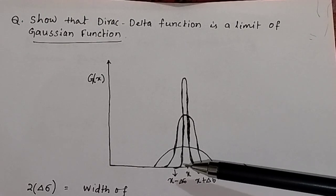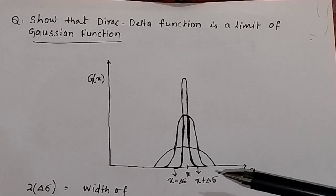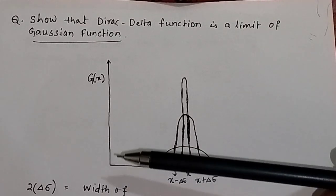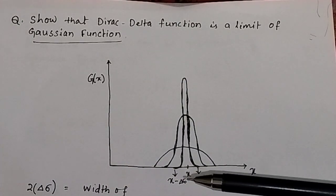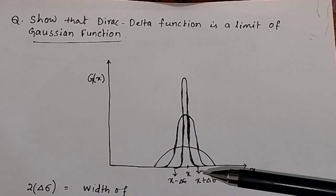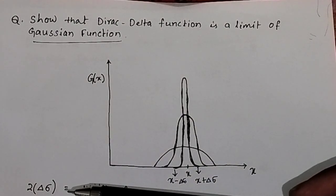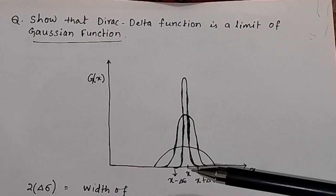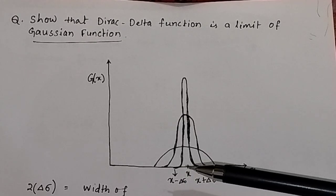This is the shape of a Gaussian function. On the x-axis we have the width of the Gaussian function, and on the y-axis we have the Gaussian function. The width of the Gaussian function here is taken as 2 times delta sigma, because you have delta sigma on both sides of the midpoint.